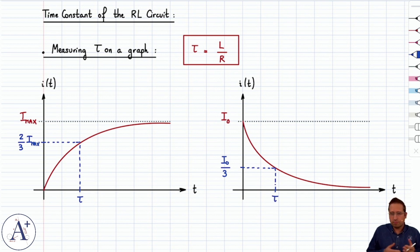So pretty straightforward, especially if you have a nice scale on the vertical axis, and you just find the time it takes to either reach two-thirds of Imax or to drop to I0 over 3, so one-third of the initial current.